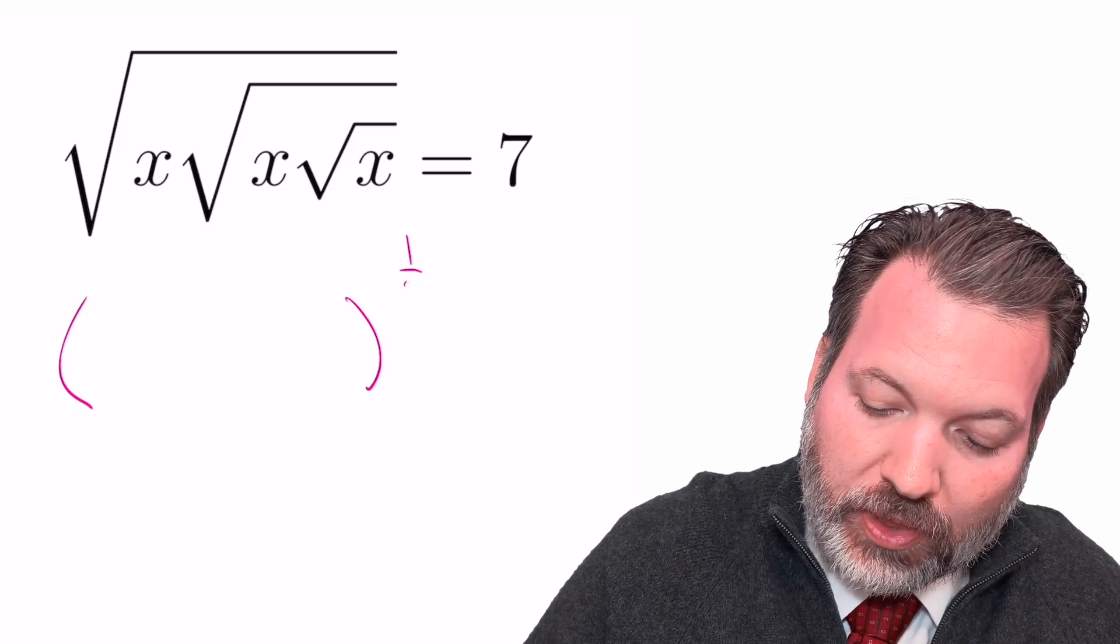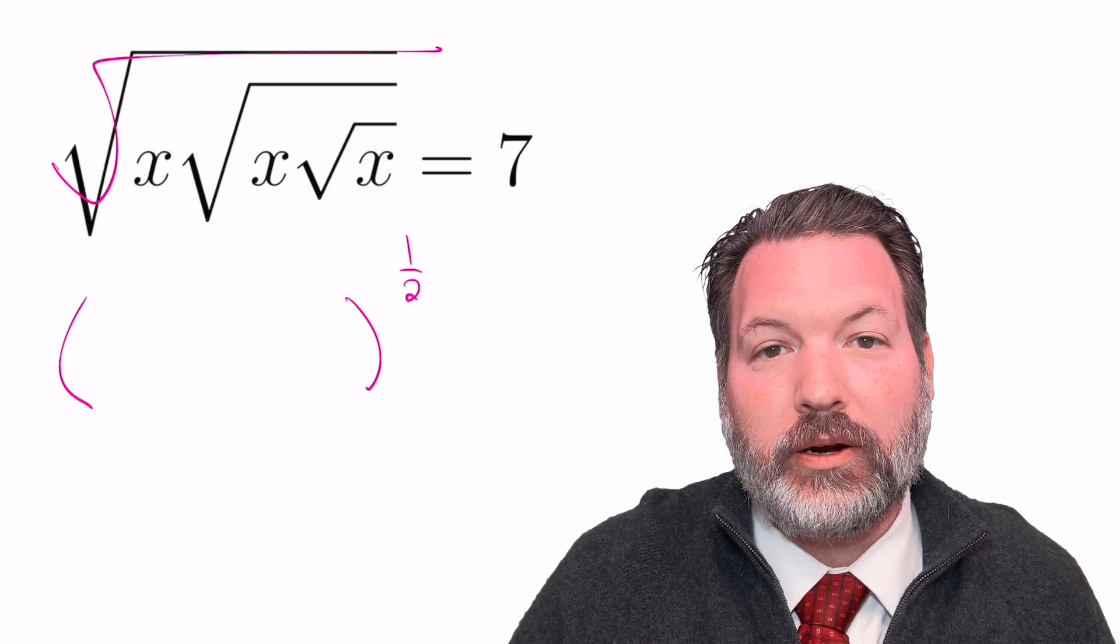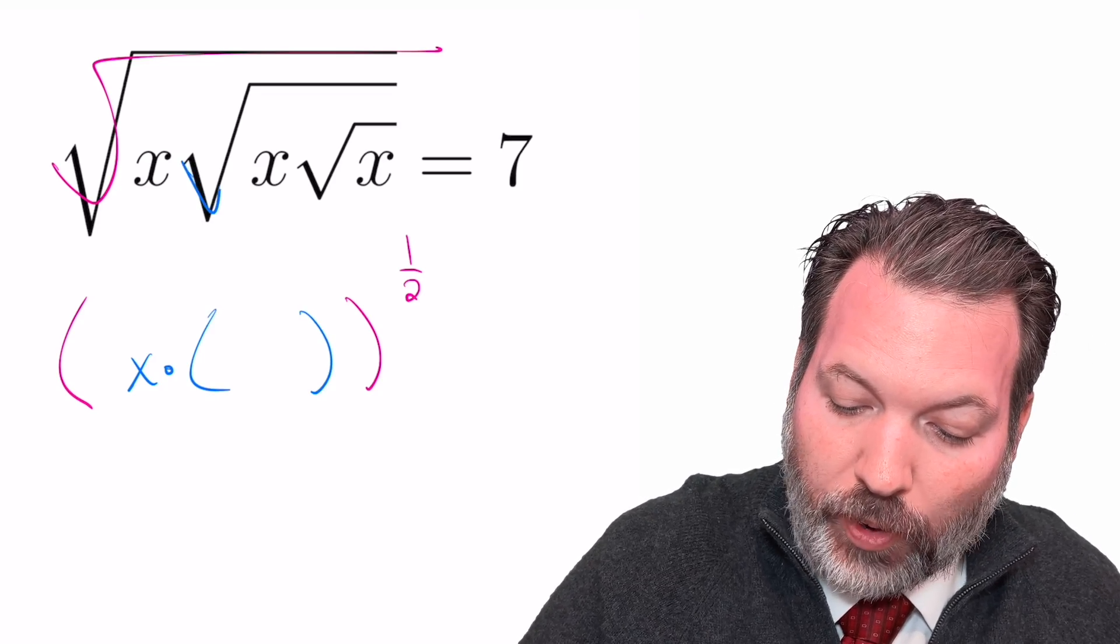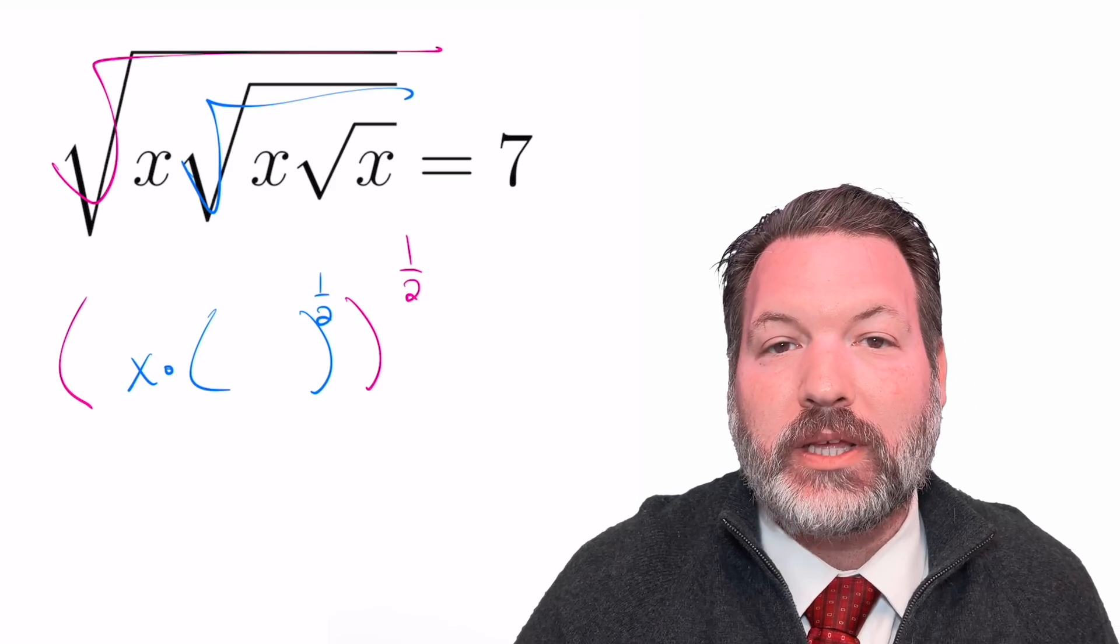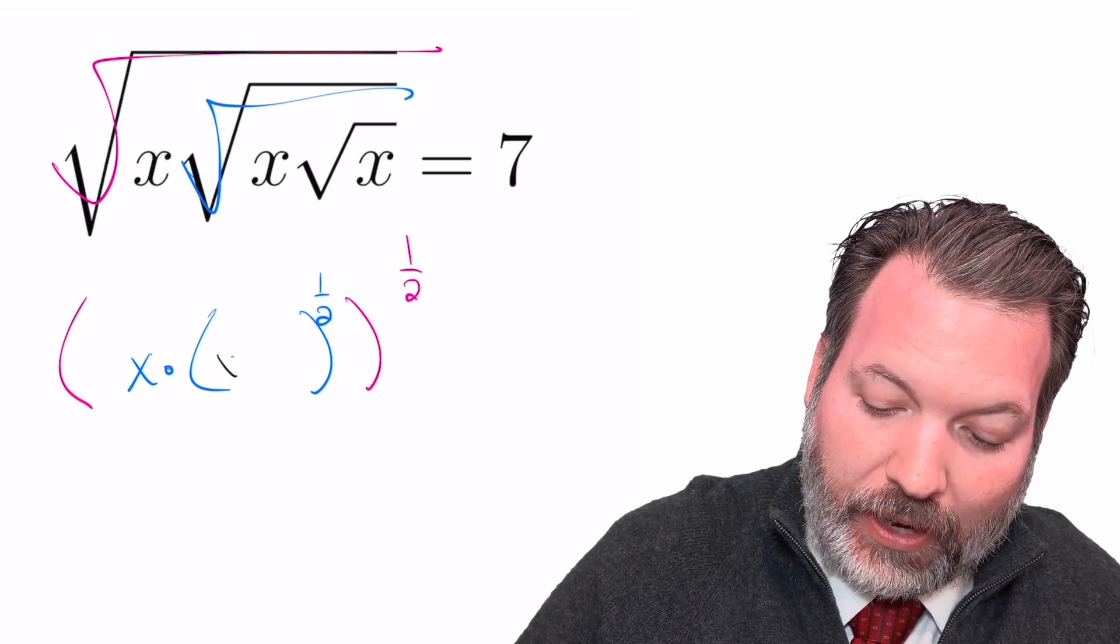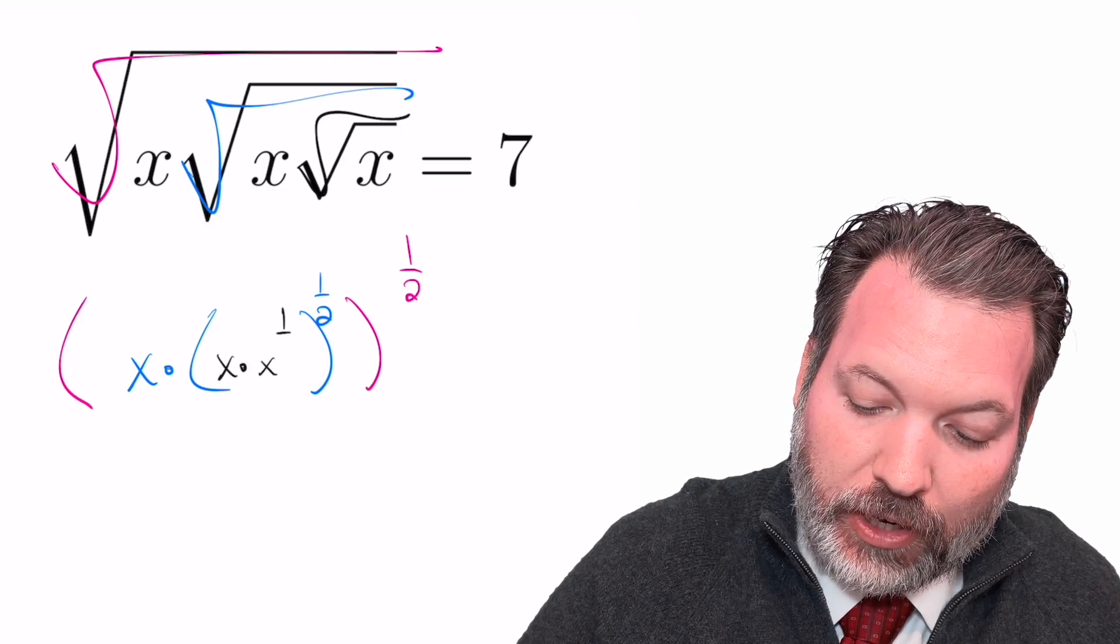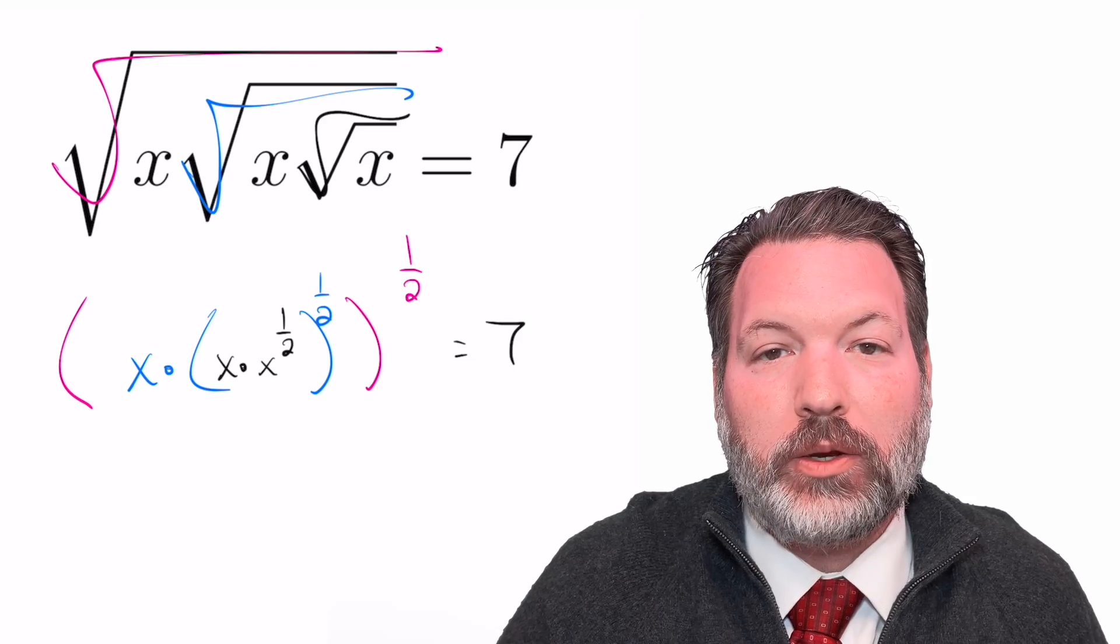This is really going to be something to the one half—that's the big square root on the outside. What's the something? x times another big square root, that's the second nested square root. Something else to the half power. What's on the inside? x times one last square root of x. x times another x to the one half power, and it's all of this that ends up equaling seven.